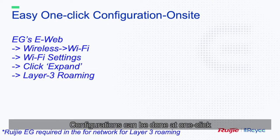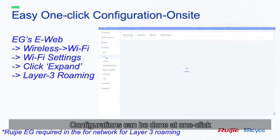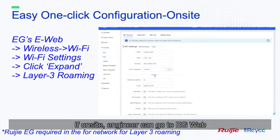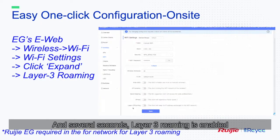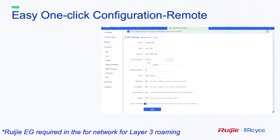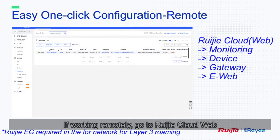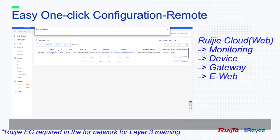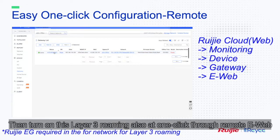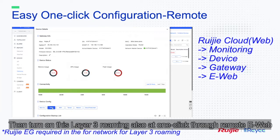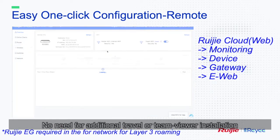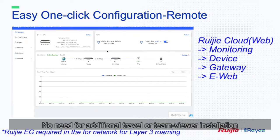Configuration can be done with one click. If on-site, an engineer can go to the EG web and in several seconds, layer 3 roaming is enabled. If working remotely, go to Rigid Cloud Web and turn on layer 3 roaming at one click through remote e-web. No need for additional travel or TeamViewer installation.